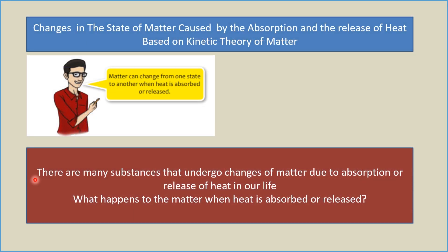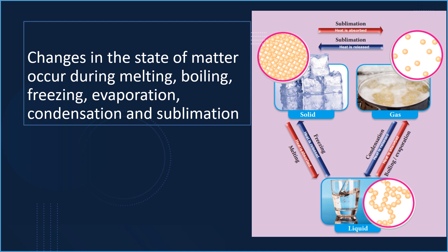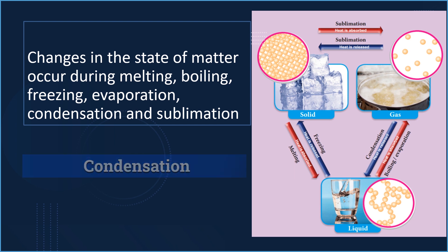There are many substances that undergo changes of state due to absorption or release of heat in our life. What happens to matter when heat is absorbed or released? Matter can change from one state to another when heat is absorbed or released. Changes in the state of matter occur during melting, boiling, freezing, evaporation, condensation, and sublimation. Let's see them one by one.